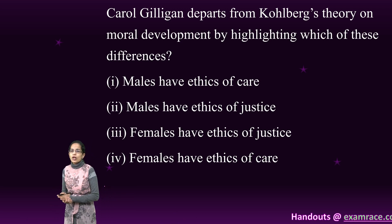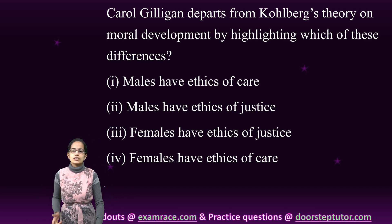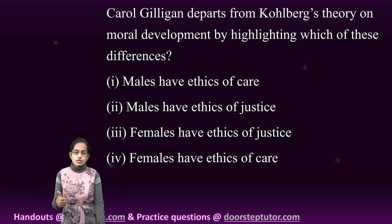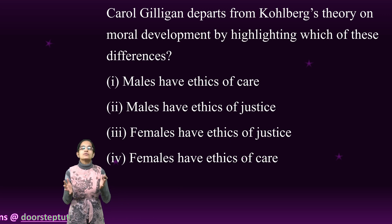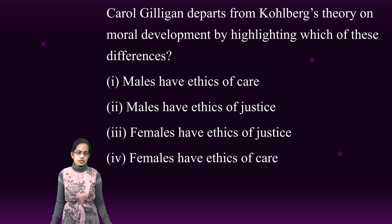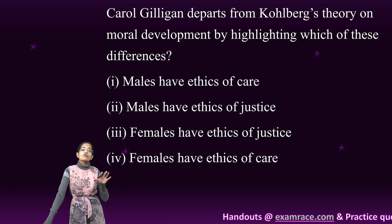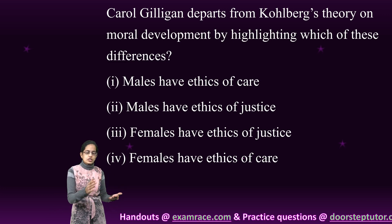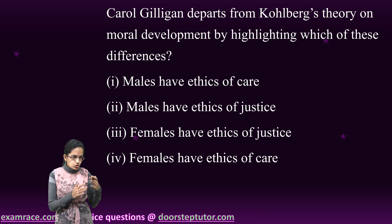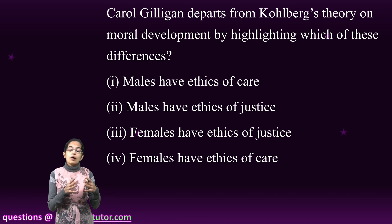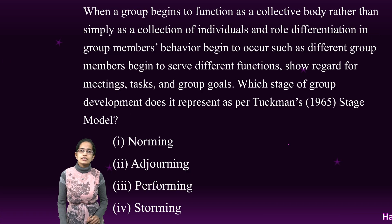Carol Gilligan departs from Kohlberg's theory on moral development by focusing on ethics of justice. Ethics of justice is a term used by Gilligan that mainly talks about the morality of justice. She says this is a measure of the rights of people and chooses a solution to work on the damages caused, focusing more on personal relationships. So ethics of justice is the right option in Gilligan's theory.